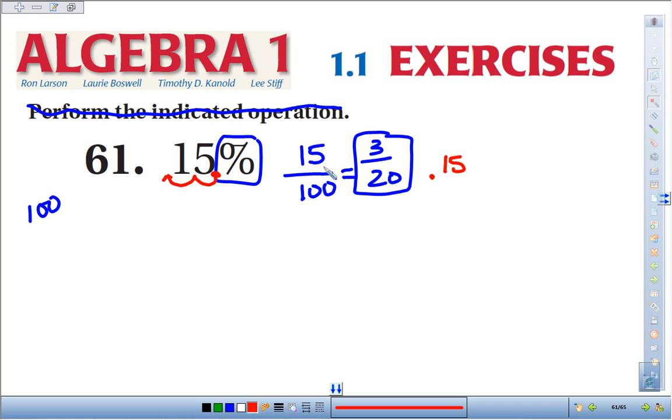Or if we think about it, 15 hundredths, whenever we have decimals, we think of our placeholders, tenths and hundredths. We want to end in the hundredths because we've got 15 of them. Tenths and hundredths. I've got 15 hundredths with 0.15.